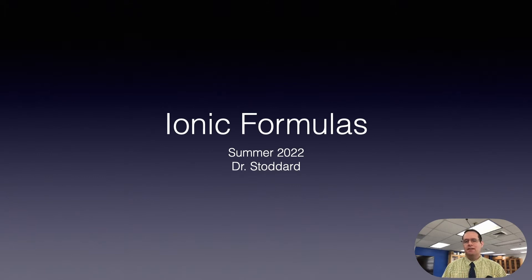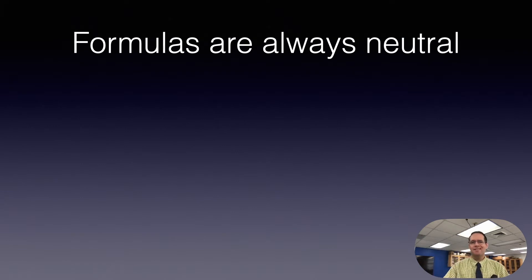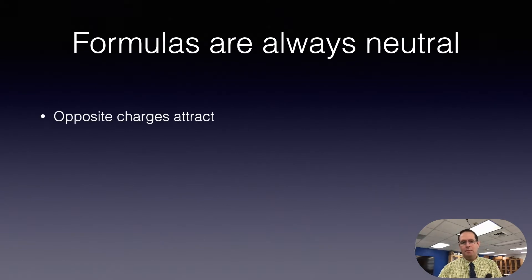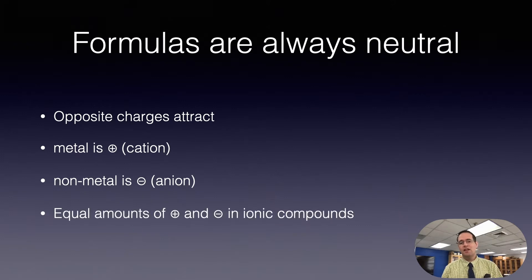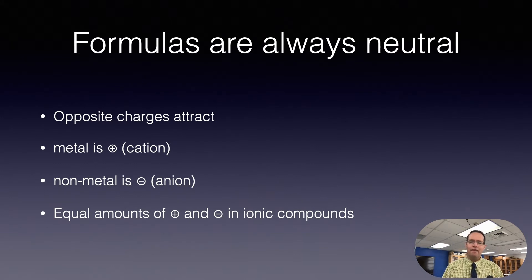This part of the video is brief, but this part of the class is a little bit longer — you need to practice more to gain skills. Formulas are always neutral. This is the basic theory: opposites attract. You're going to have your metal, which is the positive or cation, and your nonmetal, which is the negative or anion. These two come together to create your ionic bond, and you'll have equal amounts of positive and negative in ionic compounds, which makes them stable.